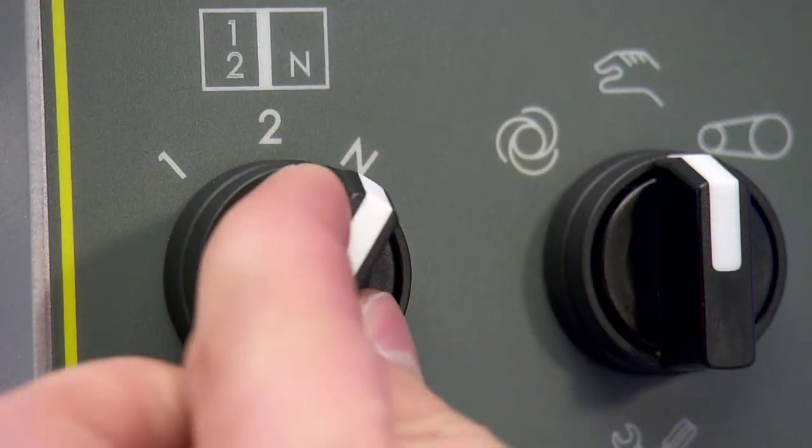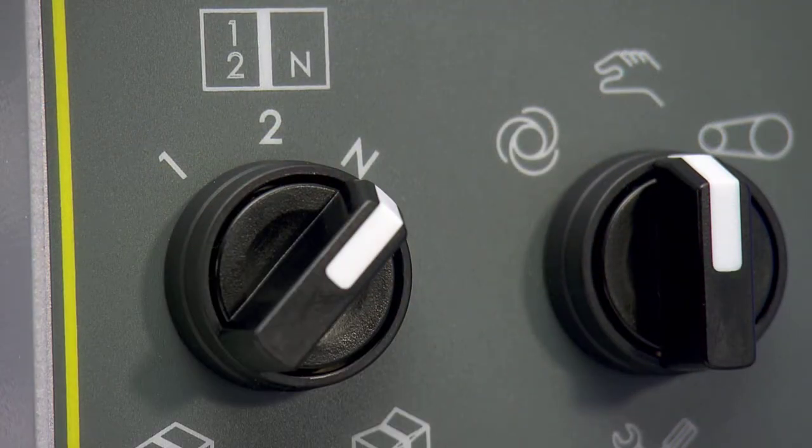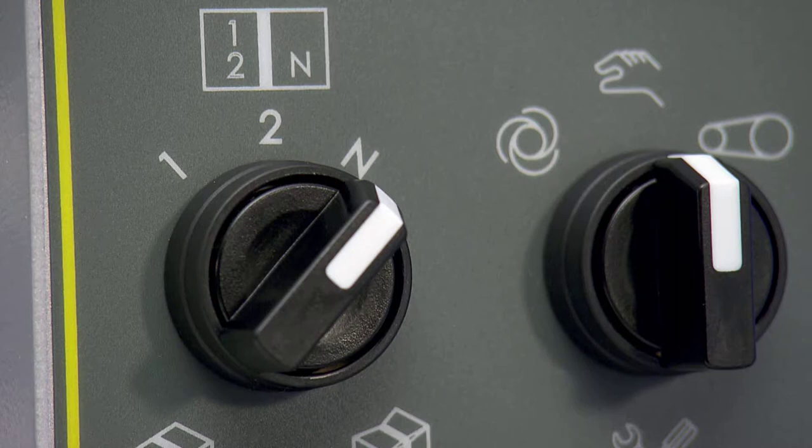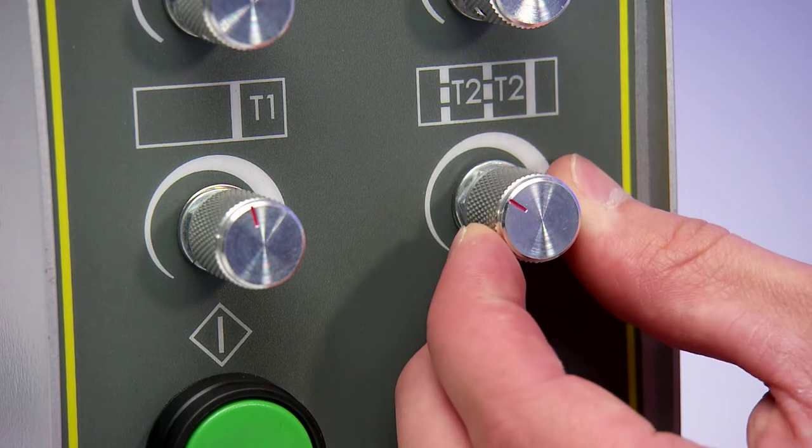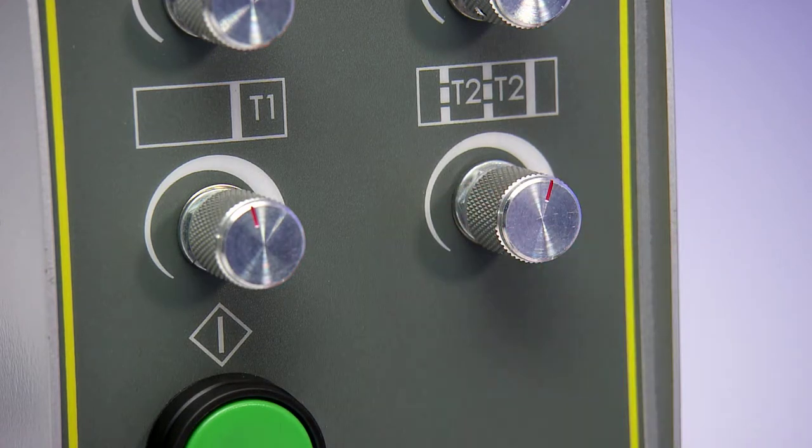If multiple straps are required at fixed intervals, the sequence control should be moved to the N position. Adjustment of the spacing of intermediate straps is made with the T2 timer control.